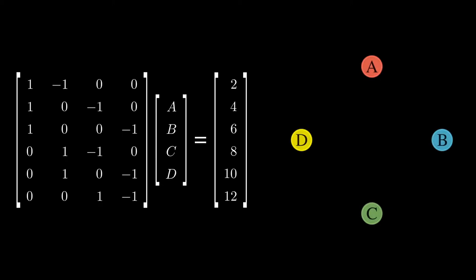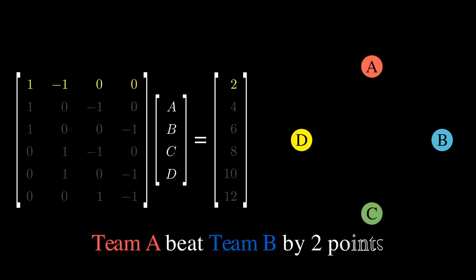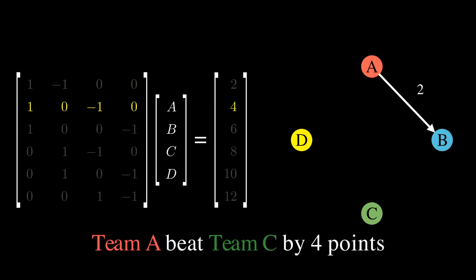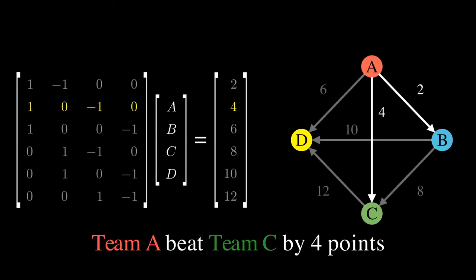Let's look at row 1. This shows us team A beat team B by two points. That means we have an edge between team A and team B, and that edge value is 2. Likewise, row 2 shows us team A beat team C by 4 points, so we add an edge between team A and team C with value 4. The rest of the graph is created with the other rows of the matrix equation.